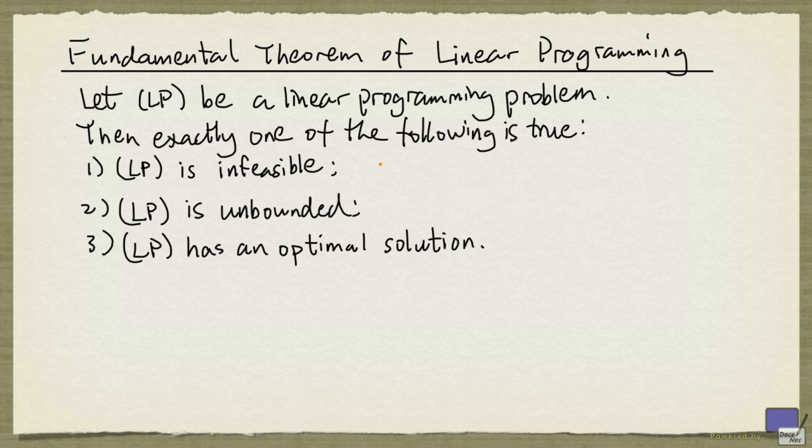Clearly, if the problem is infeasible it cannot be unbounded and it cannot have an optimal solution. And if a problem is unbounded it has a feasible solution so it cannot be infeasible and it cannot have an optimal solution. The difficult part of this theorem is if it is neither infeasible nor unbounded then it actually has an optimal solution.